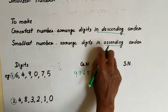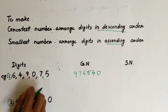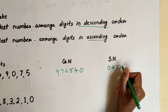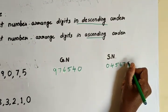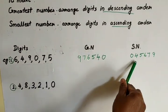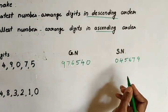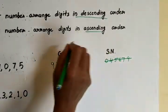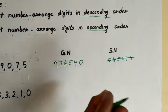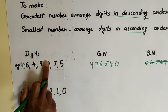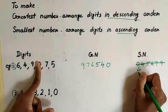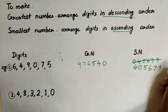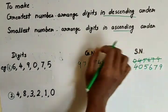To write the smallest number, arrange the digits in ascending order, that means from smallest to biggest. What is the smallest digit among these? 0. But 0 in the left holds no value, so it will never become a 6-digit number. So if 0 is in the digits, there is one exception: leave the 0, then find the next smallest. The next smallest is 4 — write 0 after this. So the smallest number is 4, 0, 5, 6, 7, 9. This is how we write the smallest number if 0 is included.